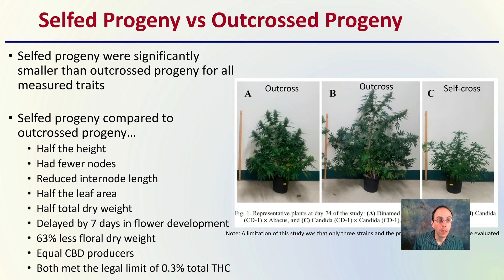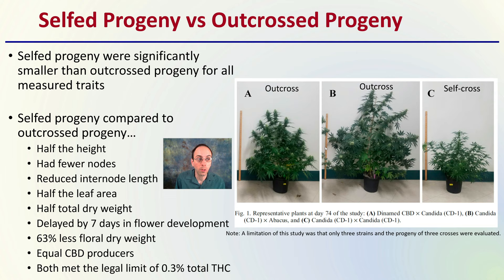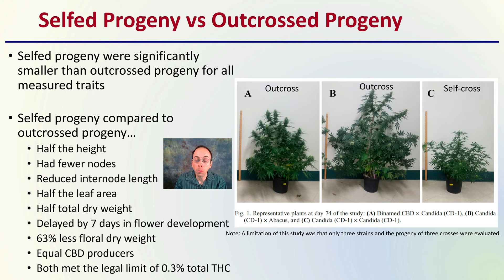Looking at self versus outcrossing examples with these images: the self-progeny were significantly smaller than outcrossed progeny for all measured traits. Letters A and B represent outcrosses, and letter C represents self-crosses — we can see a stark difference. The study reports that self-progeny compared to outcrossed plants had about half the height, fewer internodes, reduced internode length, half the leaf area, half the total dry weight, were delayed by seven days in flower development, had 36% less floral dry weight, equal CBD production, and both met the legal limit of 0.3% THC.